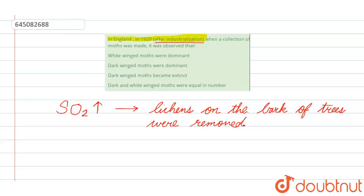...dark-colored ones got camouflaged. And the white ones got exposed. So out of these options, the correct one will be the one in which it is written that dark wings were mainly present in the population.